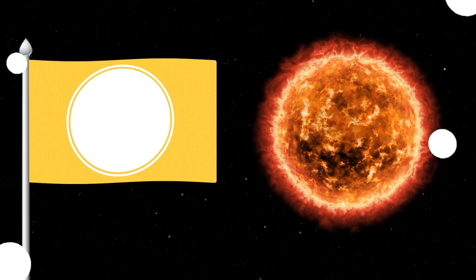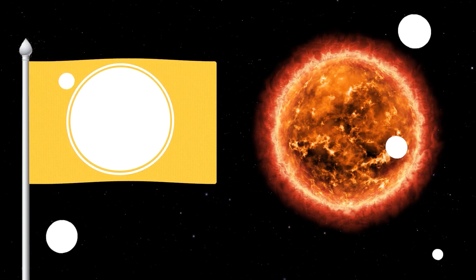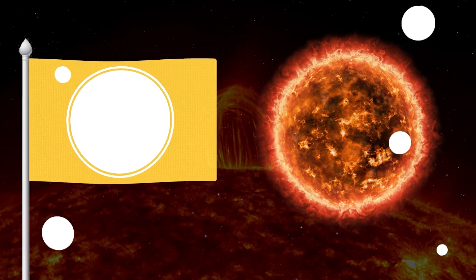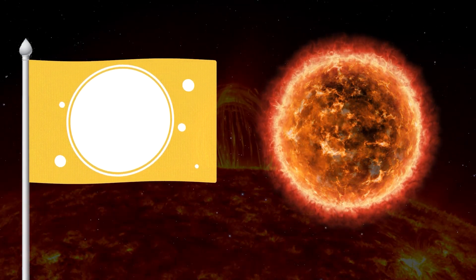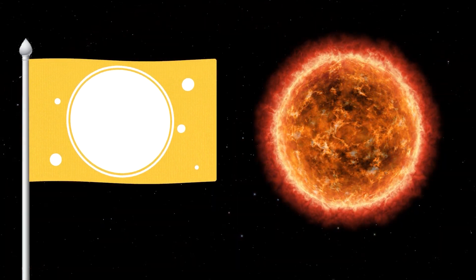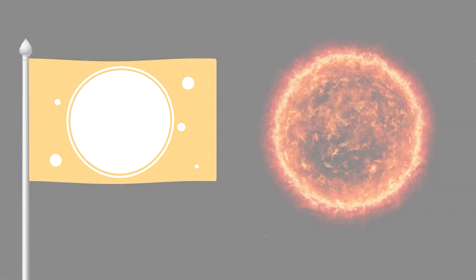Also don't forget about the coronal loops on the flag because they help scientists for example to learn more about the behavior of magnetic fields and how they affect the activity of the Sun. So we'll depict coronal loops as different sized white circles around the center. It's very nice and unusual. I think this flag has its place.